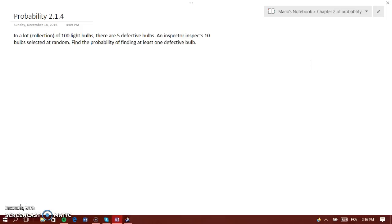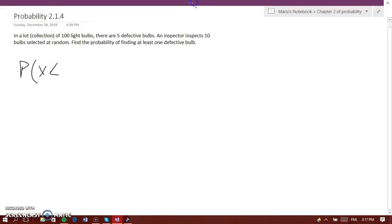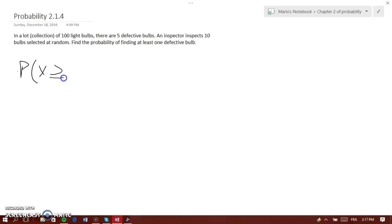To find at least one defective bulb, we need to find where X is greater than or equal to 1. That would be equal to 1 all the way to 100, but since we only have 5 defective bulbs, we'll go up to 5.